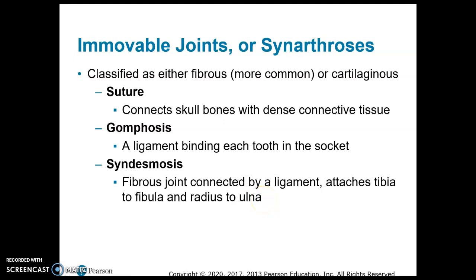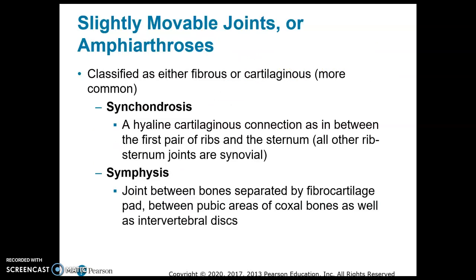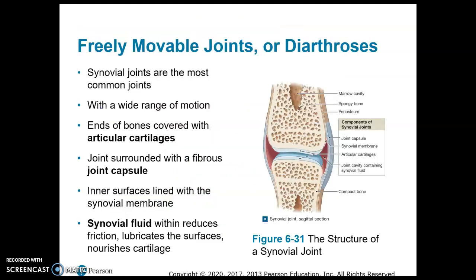These are immovable joints classified as synarthrosis. Slightly movable joints can be a synchondrosis — examples include the first pair of ribs and the sternum, as well as the epiphyseal cartilage. And the pubic symphysis is an example of an amphiarthrosis.